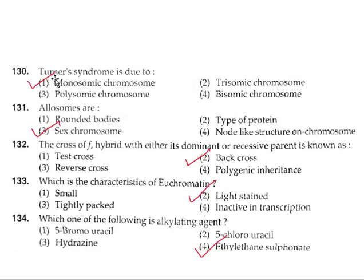Question 130: Turner syndrome is due to having one X chromosome, which is a monosomy. So the correct answer is option 1. Question 131: Allosomes are sex chromosomes. So the correct answer is option 3.